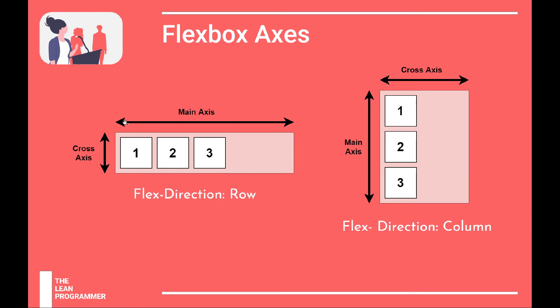If the flex direction is column, then the main axis is vertical and the cross axis is horizontal. So this is something super easy to understand. This is something very easy.